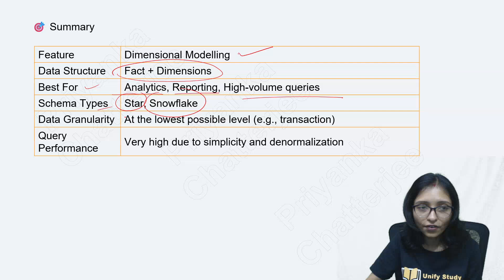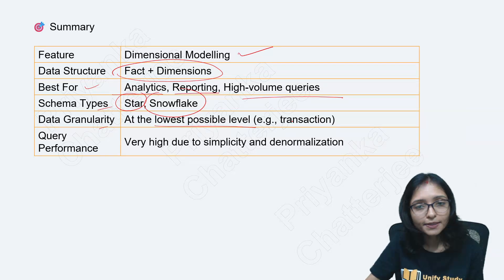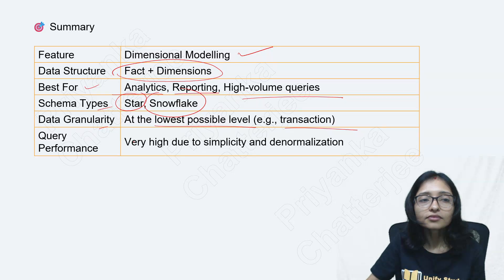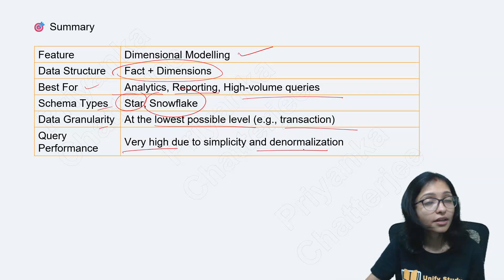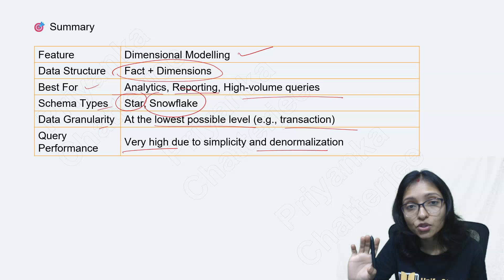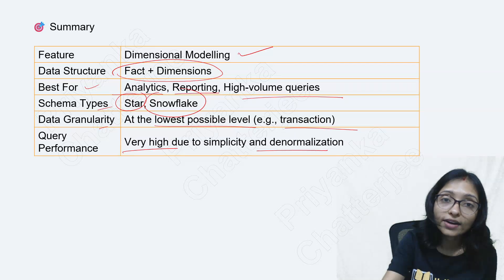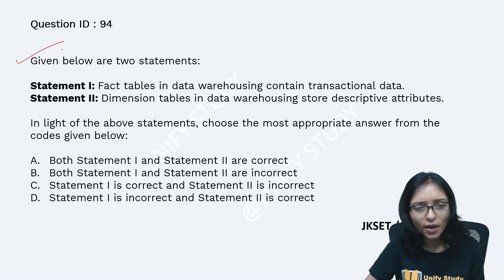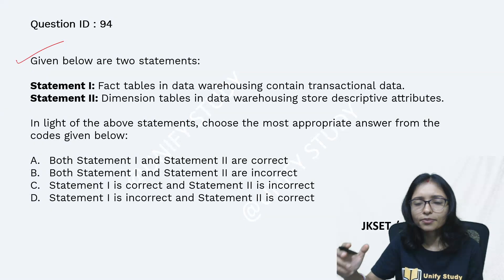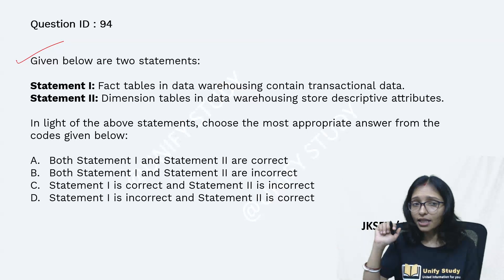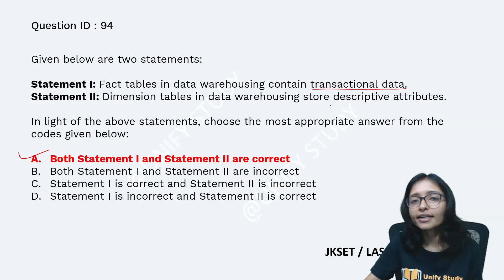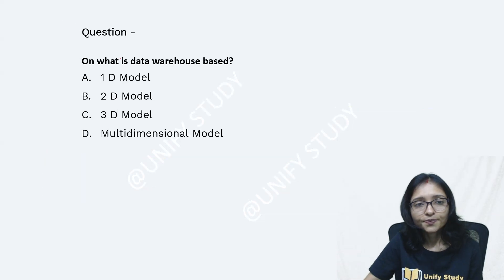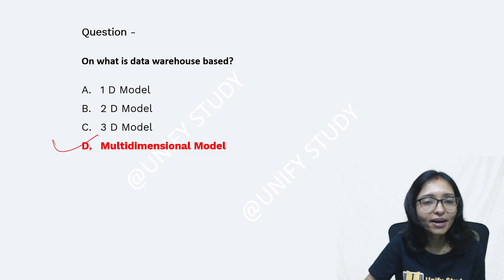Schema types are star and snowflake. Now tell me the answer. I hope it is very clear for fact table and dimension table so you can answer very easily. Both are correct answers — the fact table for data warehouse contains transactional data and the dimension table contains descriptive data. The answer for the data model type is the multi-dimensional model.